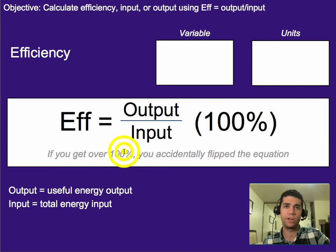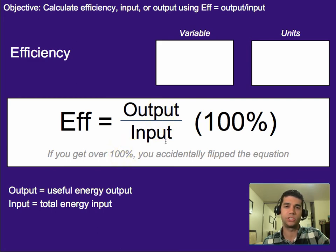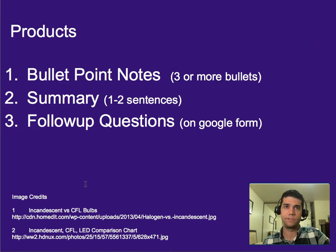Just a heads up: if you ever get over 100 percent, you probably flipped these two things and you should try re-dividing it in a different way. That's it for this one — three or more bullet points worth of notes, one to two sentence summary, and do your follow-up questions on Google Forms.